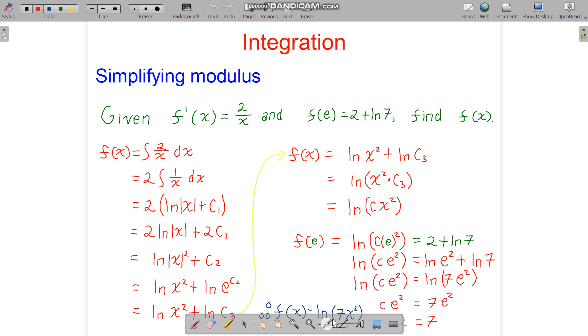Alright. So for example, here we have f prime of x equals 2 over x, and f of e equals this, find f of x. So f of x is the integral of f prime. So we can pull the 2 out. We have the integral is ln modulus of x. So we have 2 times ln modulus x plus 2 times c1, which is 2c1. We can just call it c2.